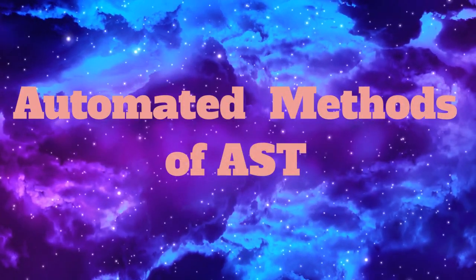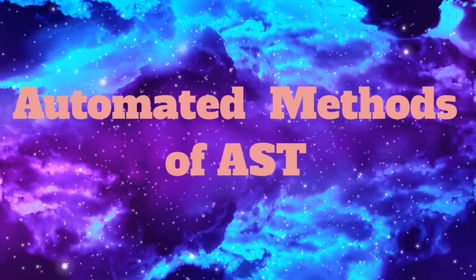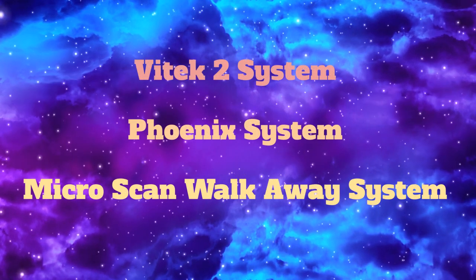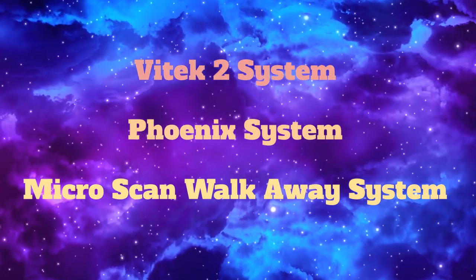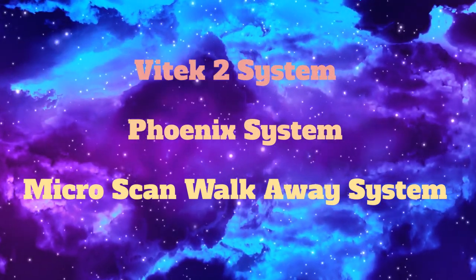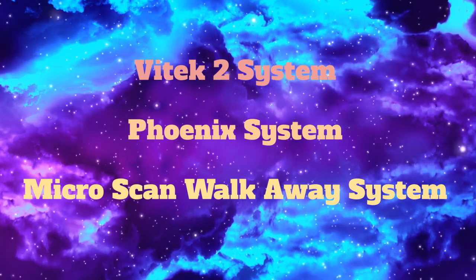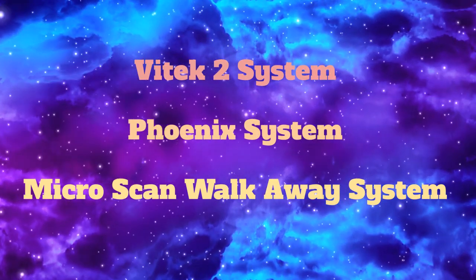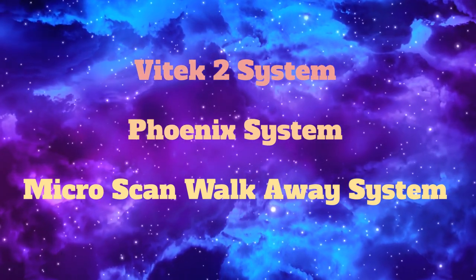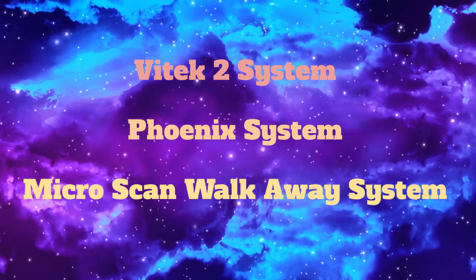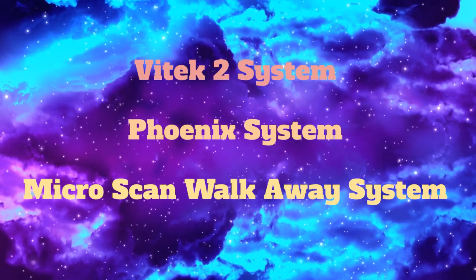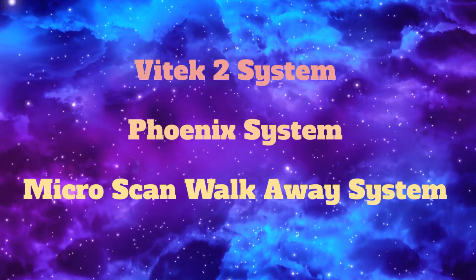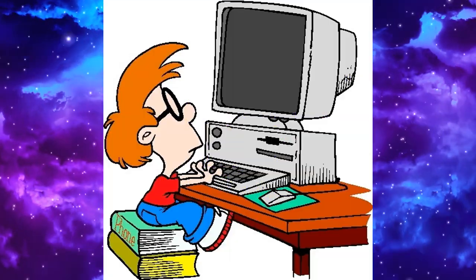Let us now discuss the automated methods. Several automated systems are available these days such as Vitek 2 bacterial identification and susceptibility testing system, Phoenix system, and Microscan walk-away system. Most of these systems use commercially available panels and provide rapid results as compared to traditional methods. These systems are computer assisted and have sophisticated softwares.